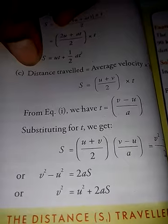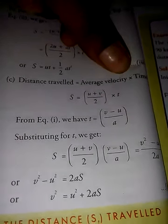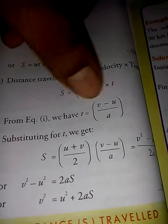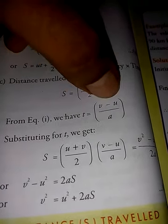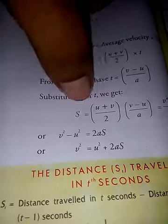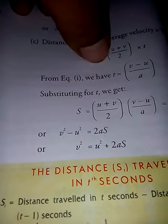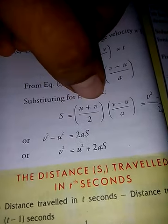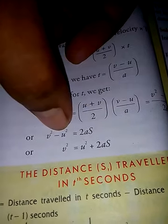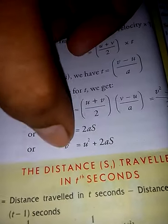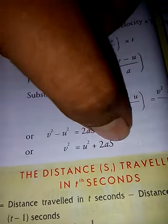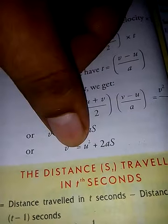For the third equation analytically: s = (u + v)/2 × t. From equation 1, t = (v - u)/a. Substituting: s = (u + v)/2 × (v - u)/a, which gives v² - u² = 2as, or v² = u² + 2as. This is the third equation of motion.